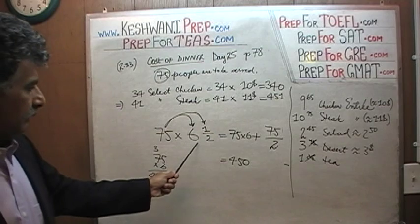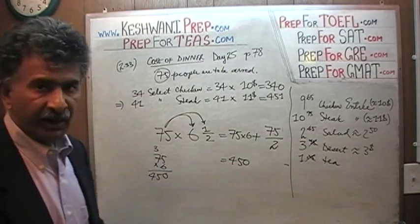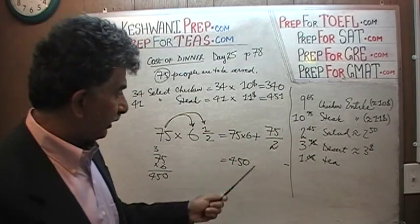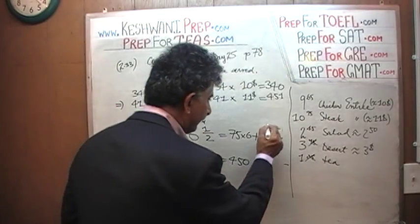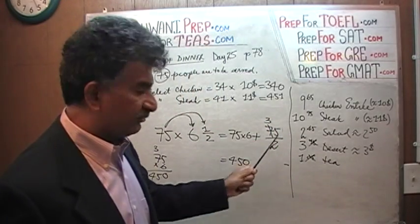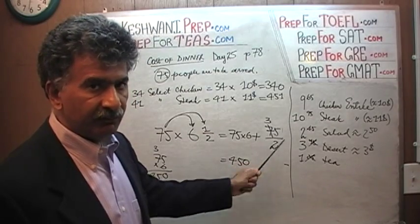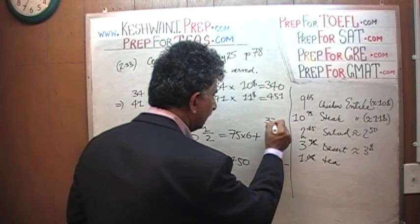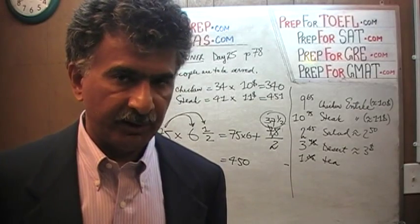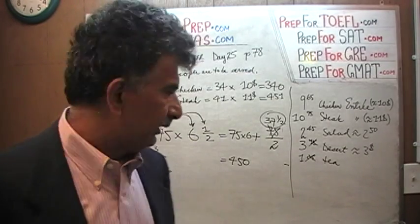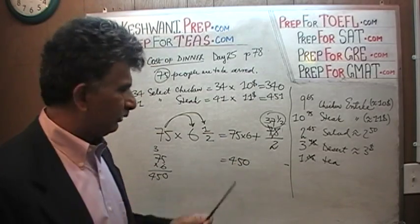Now we have to take half of 75, which is 75 times 1.5's remaining part. How many 2s in 7? Three 2s are 6, cross out the 7, put down 3. The remaining one joins the 5 and becomes 15. How many 2s in 15? Seven 2s — so half of 75 is $37.50. But if you don't want to make too much fuss, you can approximate half of 75 as about 38. So it's $450 plus around $37 to $38.